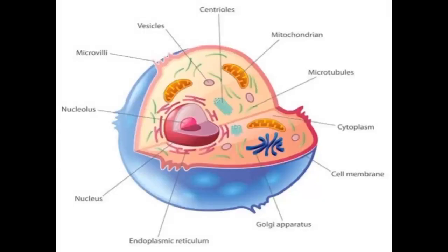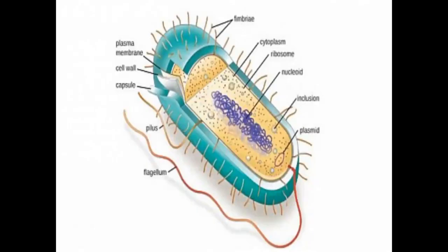Organelles are defined as small membranous bodies, each with a specific structure and function. Prokaryotes do have cytoplasm. Cytoplasm is a material contained by a cell membrane and a cell wall, and it includes ribosomes and enzymes.